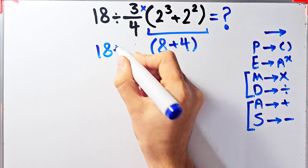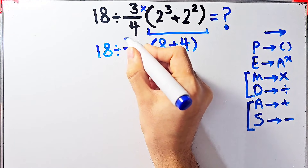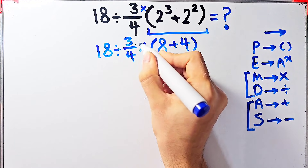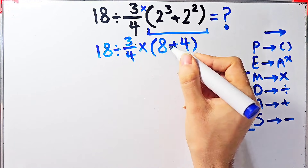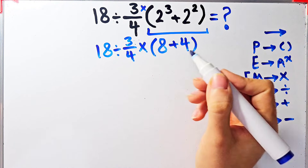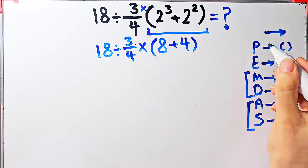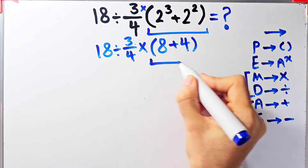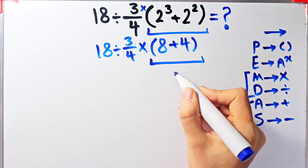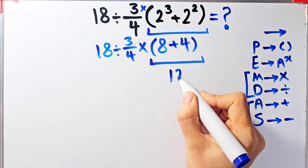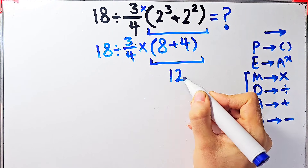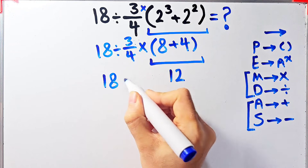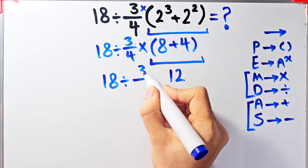Now we have 8 plus 4 inside the parenthesis. The expression becomes 18 divided by 3/4, then times open parenthesis 8 plus 4 close parenthesis. Simplifying the parenthesis: 8 plus 4 equals 12. So now we have 18 divided by 3/4, then times 12.